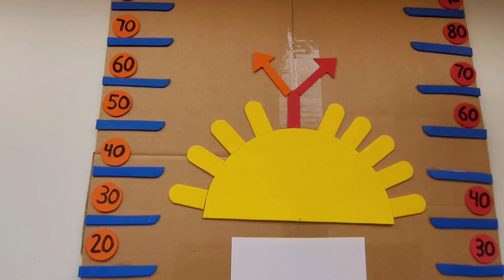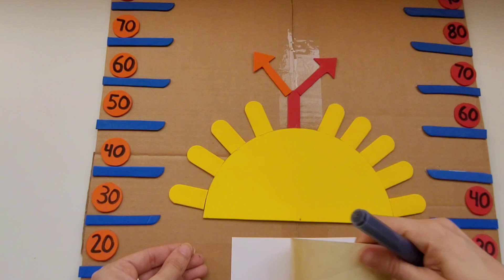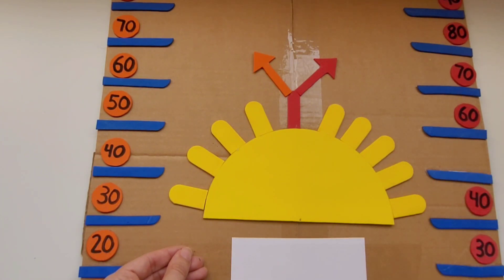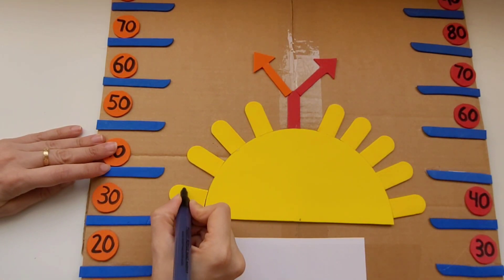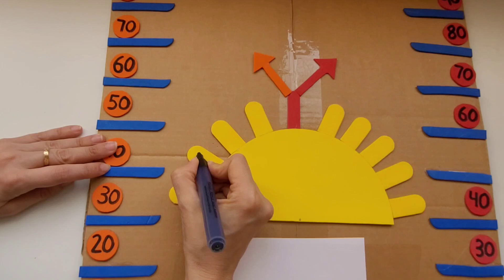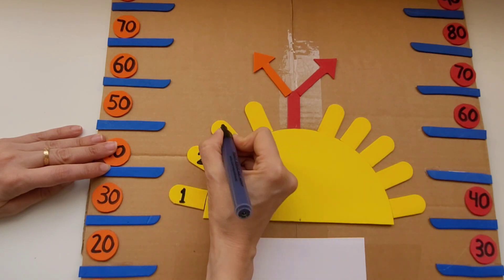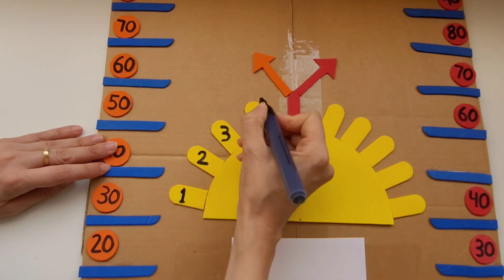I'm going to fasten everything onto the board and then I'm going to use some clear tape to cover the white paper. This way the paper will be like a whiteboard. You can write on it with a dry erase marker and reuse it to practice over and over.